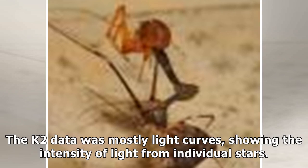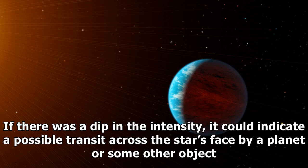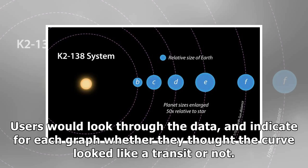The K2 data was mostly light curves, showing the intensity of light from individual stars. If there was a dip in the intensity, it could indicate a possible transit across the star's face by a planet or some other object. Users would look through the data and indicate for each graph whether they thought the curve looked like a transit or not.